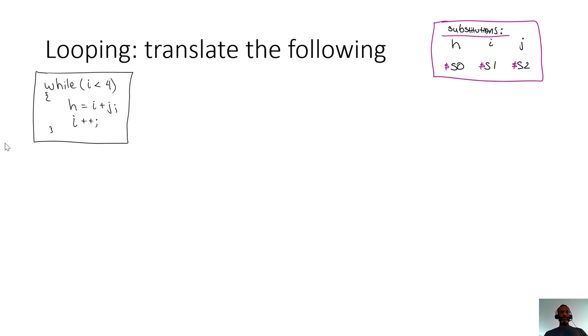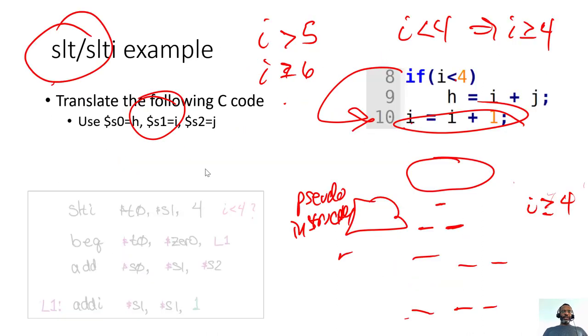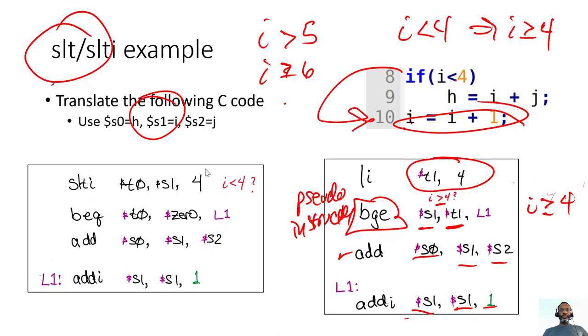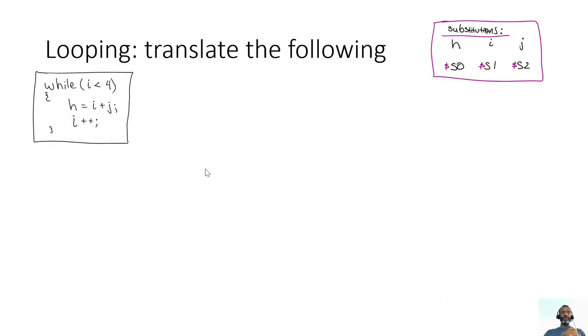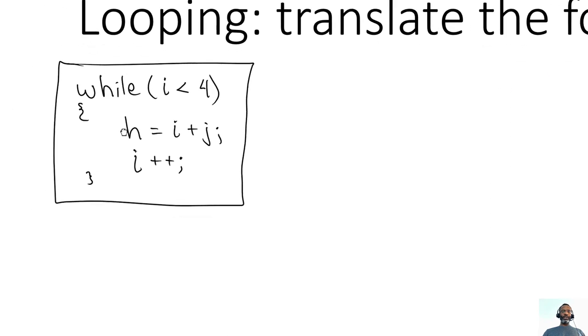We have seen in the previous video clip how to work with a set-on-less-than instruction where we work with inequality. Now what I'd like to do is use that idea of checking if the value is less than and then looping based on those conditions.